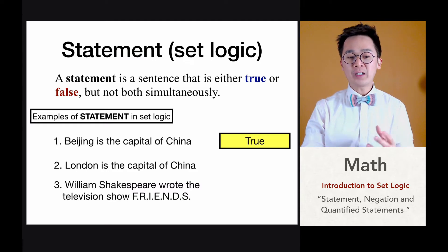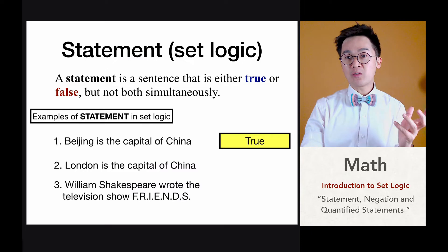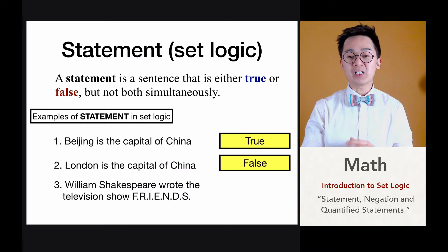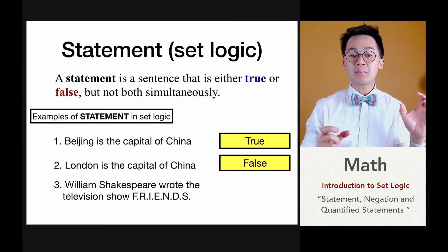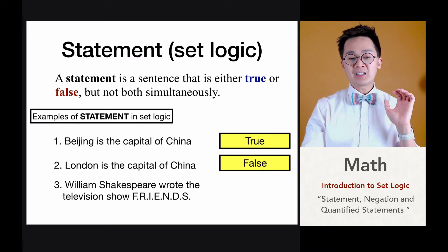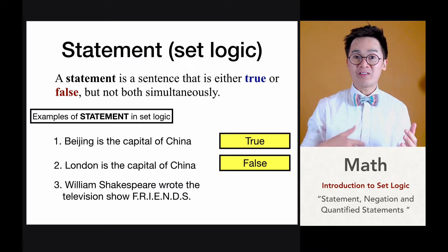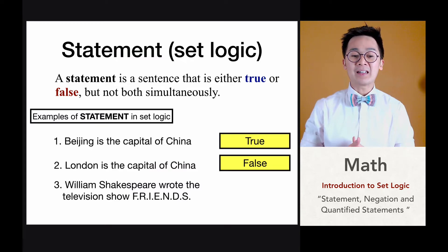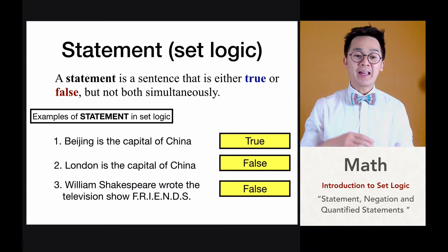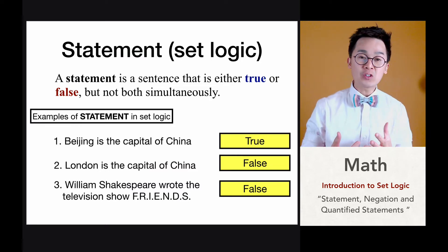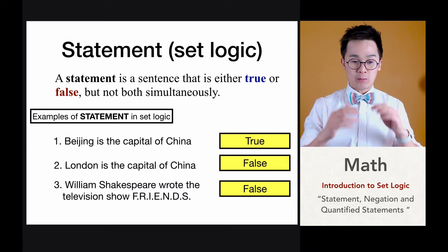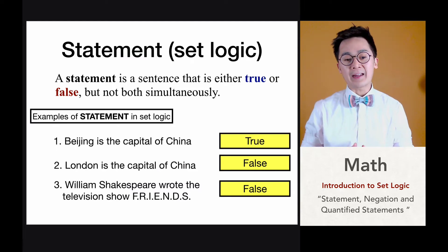Yung number two, London is the capital of China, ito din ay nagpo-fall under sa valid statement sa set logic kasi yung London is the capital of China is a false statement, at alam natin na yung London ay hindi capital ng China. Kaya alam natin na false statement siya, kaya statement pa rin siya sa set logic. At yung number three, si William Shakespeare, alam natin na matanda na ito at yung Friends ay yung television show in the 90s. Itong statement number three ay isang false statement kasi hindi naman sinulat ni William Shakespeare yung TV show na Friends dahil wala pang television noon nung kapanahon niya. Ito yung mga examples ng statement sa set logic dahil itong mga sentences ay either true or false lang.